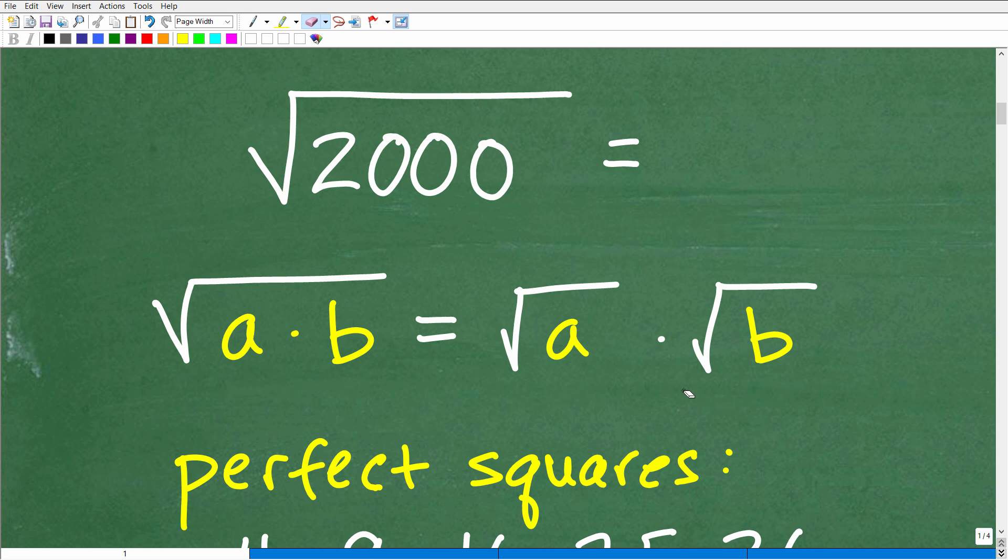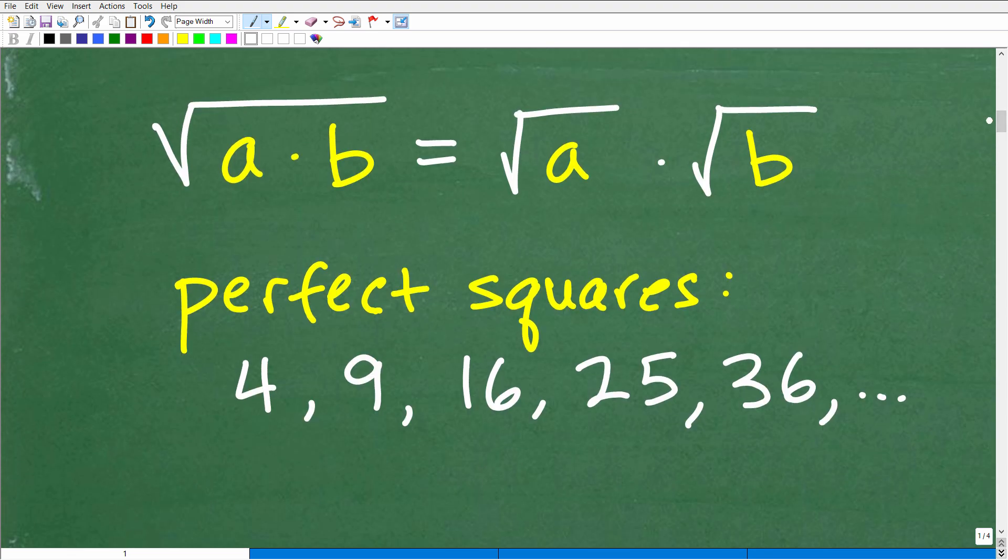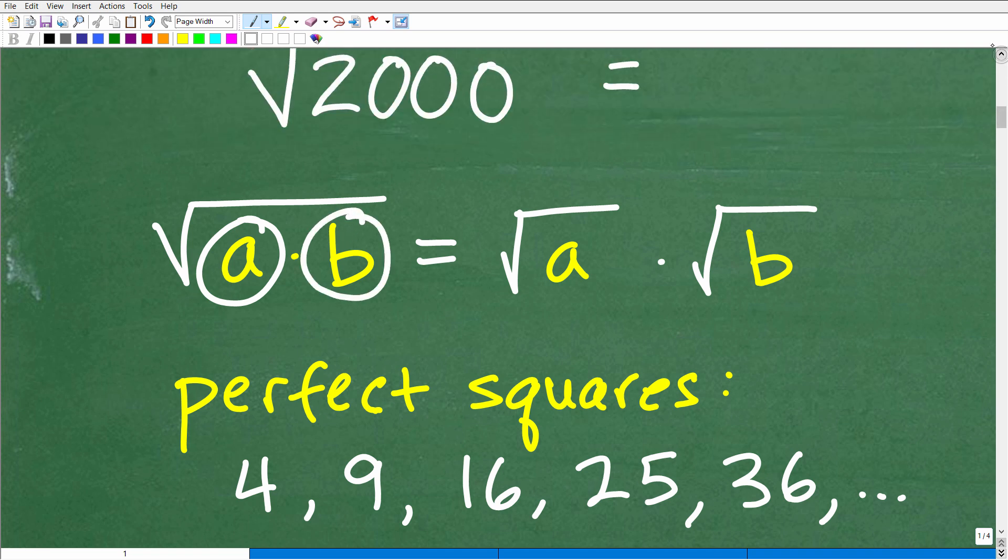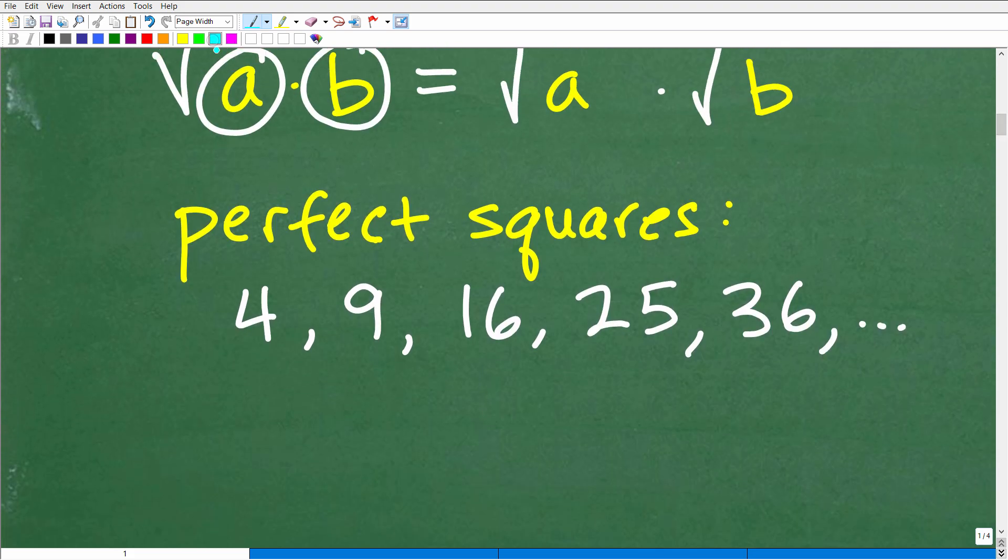But there's another part of this problem that you're going to have to understand before we can put this all together, and that is something called perfect squares. So we're going to want to factor 2,000, and you can factor 2,000 into all sorts of factors, but what type of factors, right? Well, we've got 2 times 1,000. That would be factors of 2,000. But we want to be looking for very specific type of factors called perfect square factors.